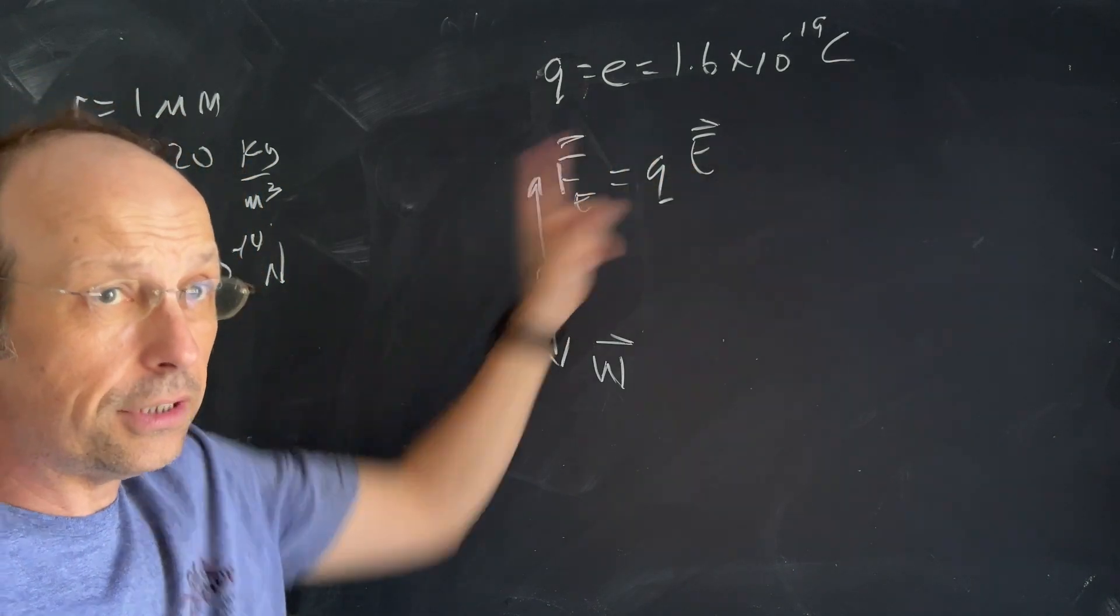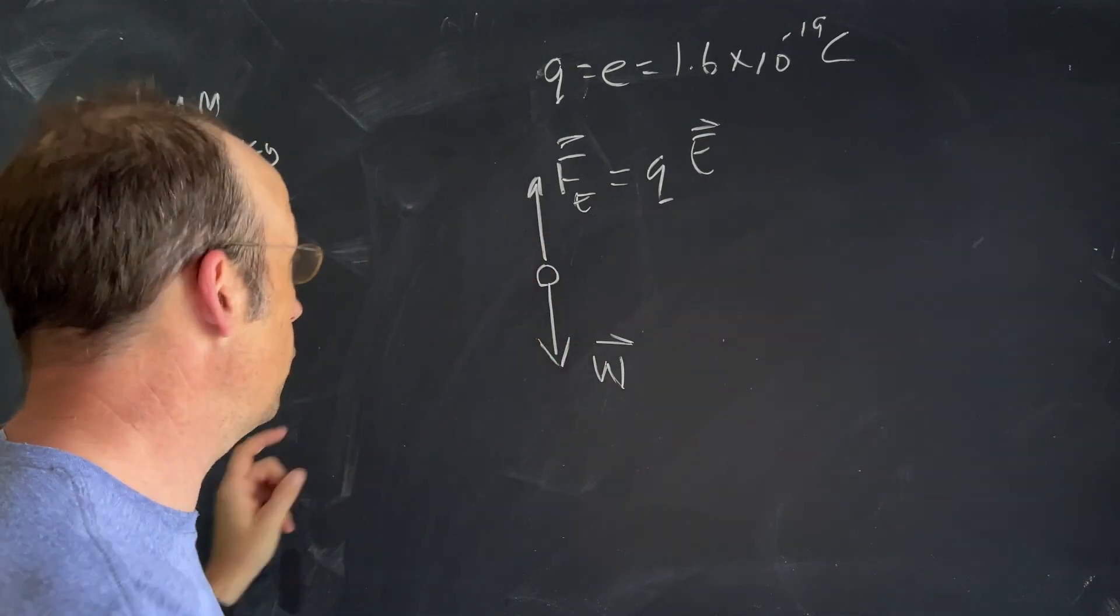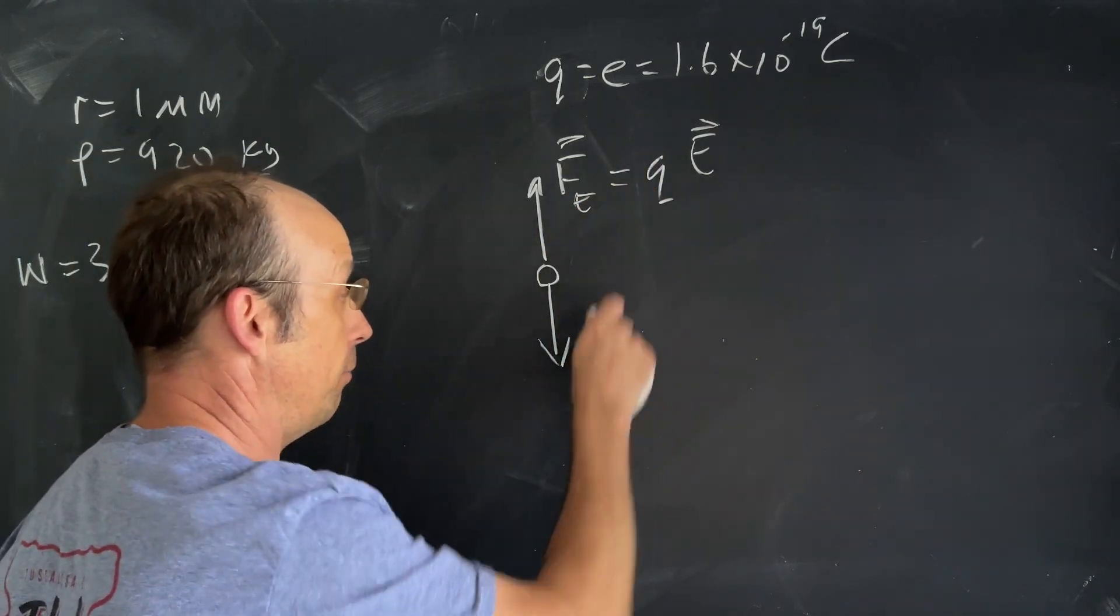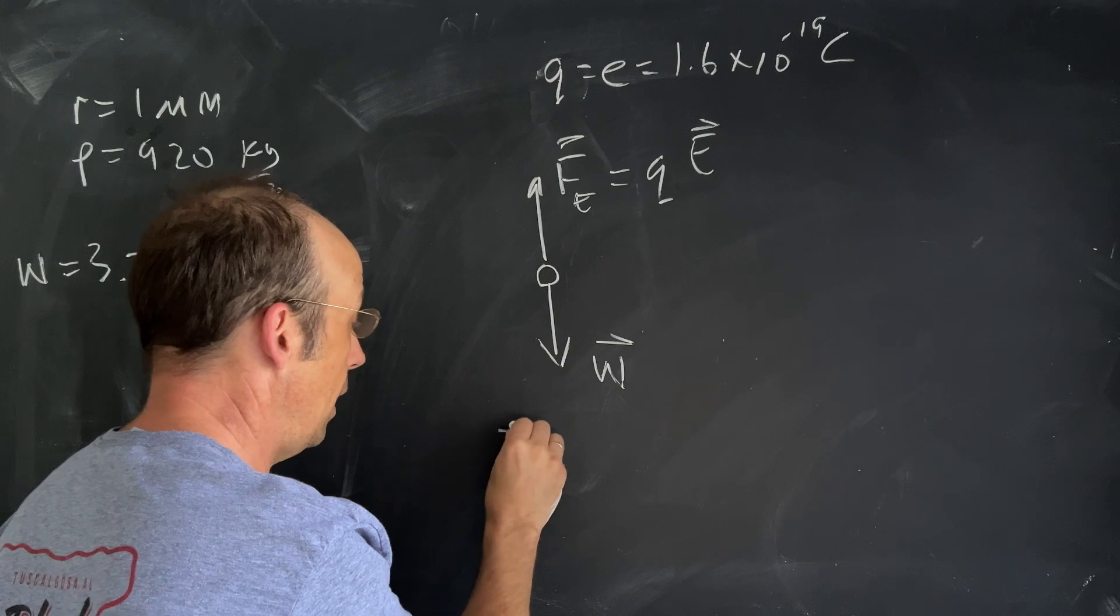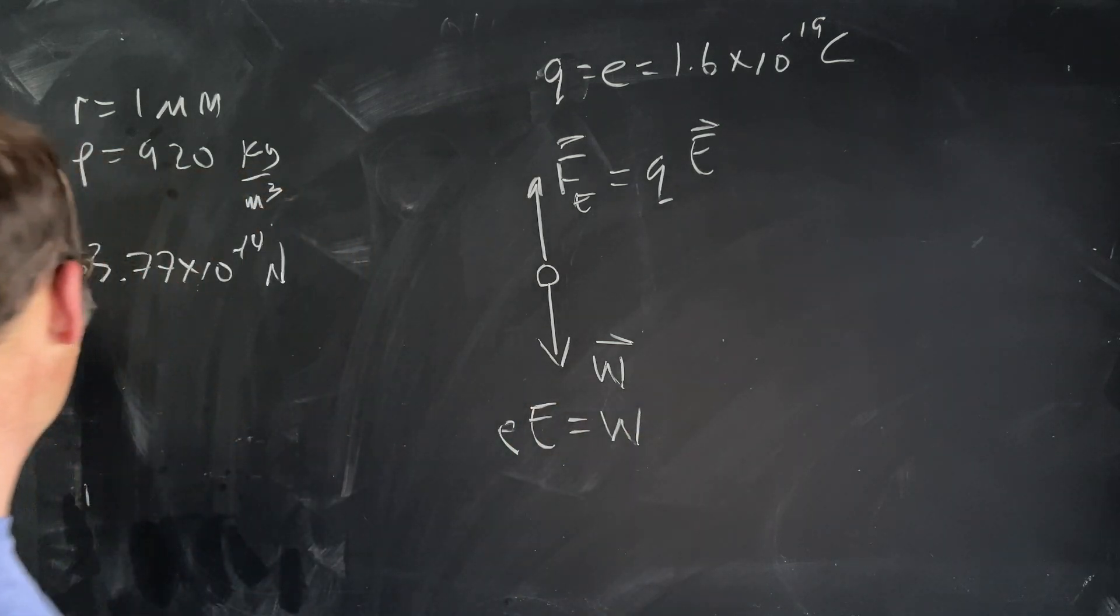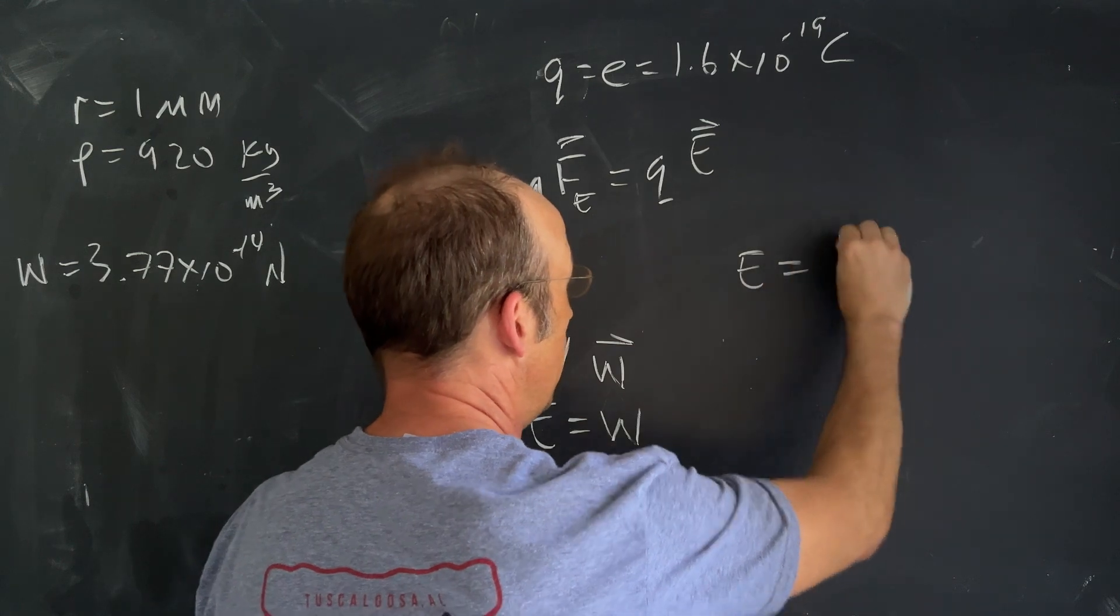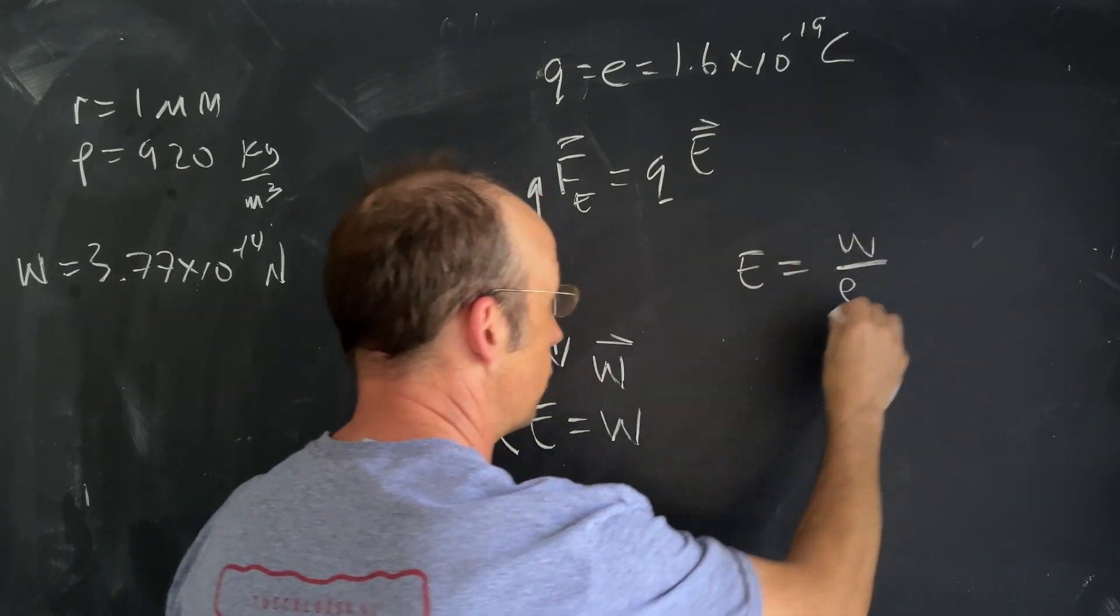These are vectors. That one's pushing up and that one's pushing down but they're in one dimension. So I know that the magnitude of this has to equal the magnitude of that. So E equals W. I know the weight already so I want to find the value of the electric field. E would be the weight over the electric charge.